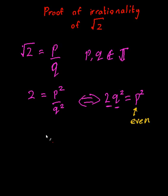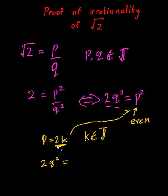If that's the case, P can be written as 2K, and K again is an integer. Now if K is an integer, I can plug it back in here, and when I square this I will end up with 4K squared.